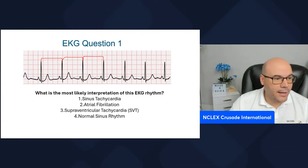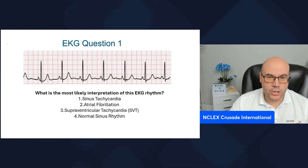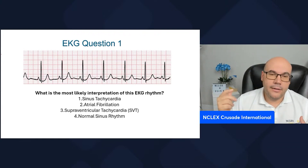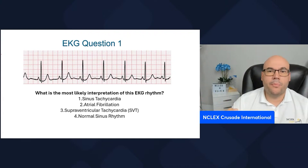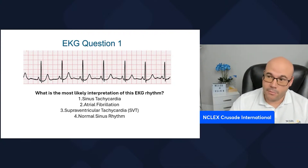Now let's identify the heart rate in this strip, where we're facing a regular rhythm. I'll use the simple method — method number one — which is identifying the QRS complexes in the strip and multiplying by 10. But first, we need to confirm this is a six-second strip by counting the big squares; we need 30 big squares.